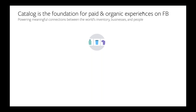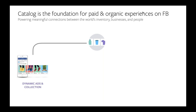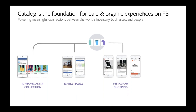Catalog, which is our inventory platform, is a foundational component of both paid and organic experiences on Facebook. The team's mission is to power meaningful connections between the world's inventory businesses and people through a number of different products and experiences. Our three main use cases are: dynamic ads and collection, which are shoppable ad formats; Marketplace, where you can buy and sell products locally and beyond; and Instagram Shopping, a fairly new organic product that lets you tag products from your catalog in images so people can purchase directly.